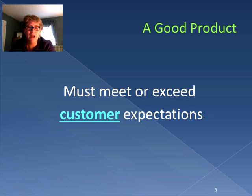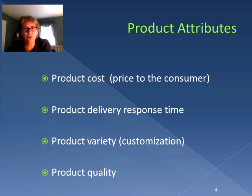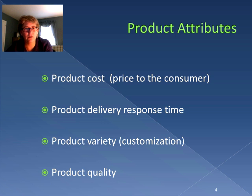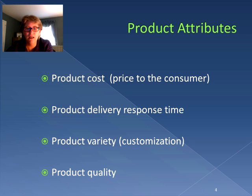So how do we know whether we're making a good product? Well, the customer looks at a product from a variety of different perspectives. These are what we call our product attributes. First of all, how much is it going to cost them? That's their price, the price to the consumer. Another thing they are concerned about is, when can I get it? That's what we call the product delivery response time.